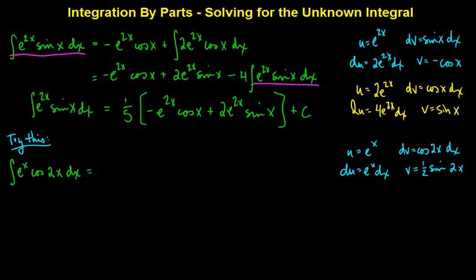So we have uv, which is one-half e to the x sine 2x, and I'll write that as e to the x over 2 sine 2x minus the integral of vdu, which is one-half e to the x sine 2x dx. And we can see that we still have a situation where we'll need to do a repeated integration by parts.